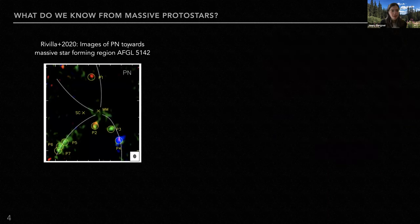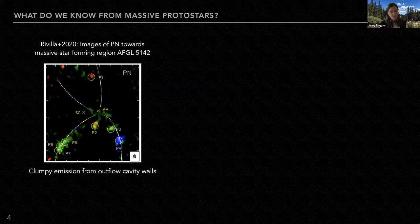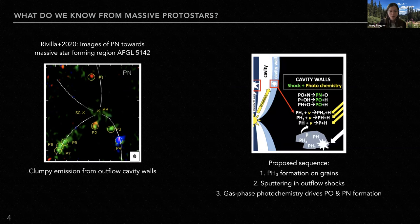A big step forward was made a couple of years ago when the phosphorus carriers PN and PO were actually mapped towards the massive star-forming region AFGL 5142. This is an image of the phosphorus emission towards the source. The dashed lines trace where the outflow cavity is, and we see that spots of emission appear to trace the outflow cavity walls. Based on these observations, the authors proposed a sequence for why we see PN and PO emission where we do in the source.